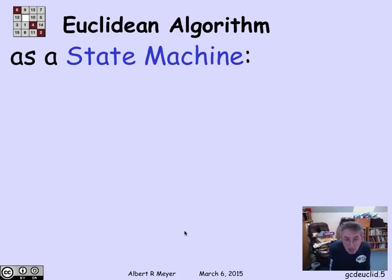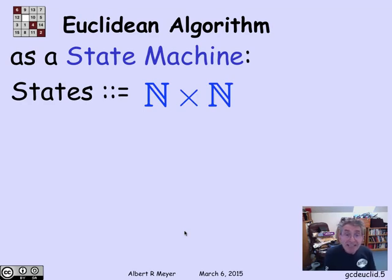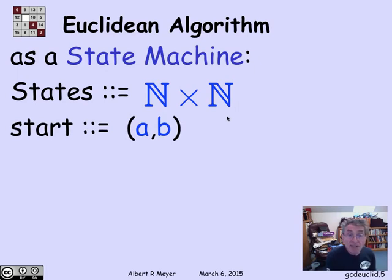It's a good exercise in state machine thinking and practice in program verification to reformulate the Euclidean algorithm explicitly as a state machine. The states will be pairs of non-negative integers, n cross n. The start state is going to be the pair AB whose GCD I want to compute.